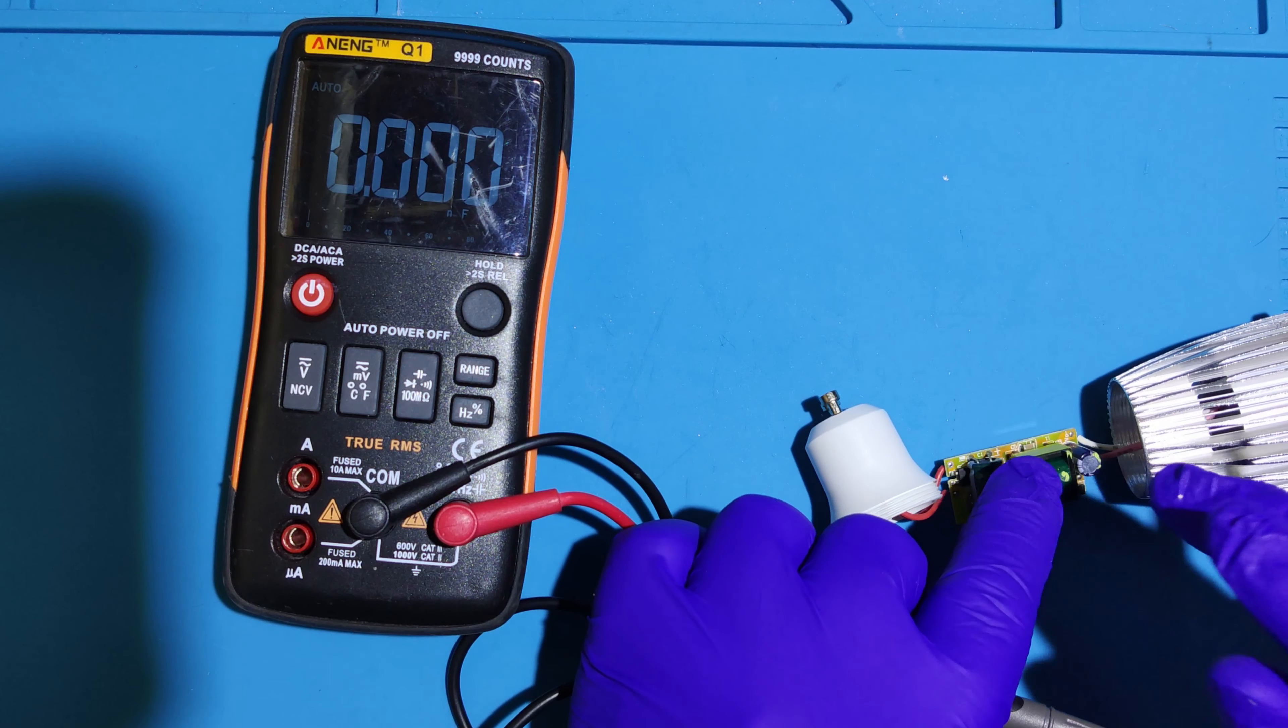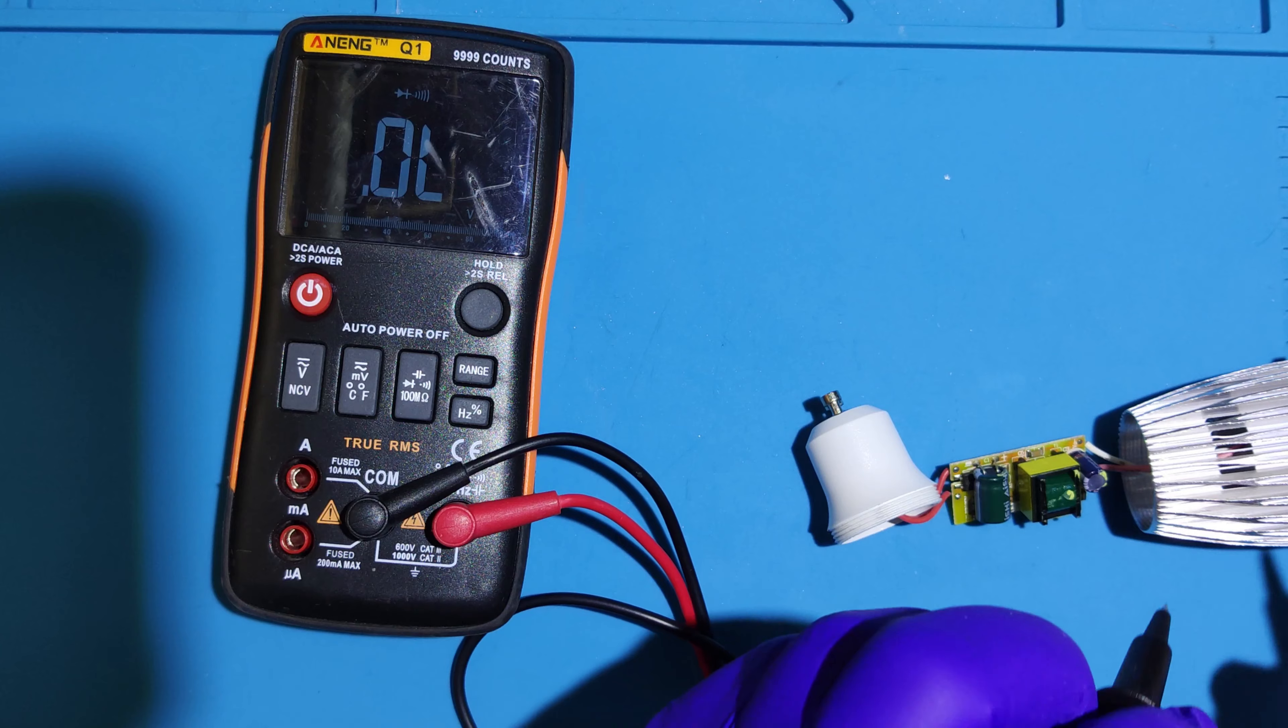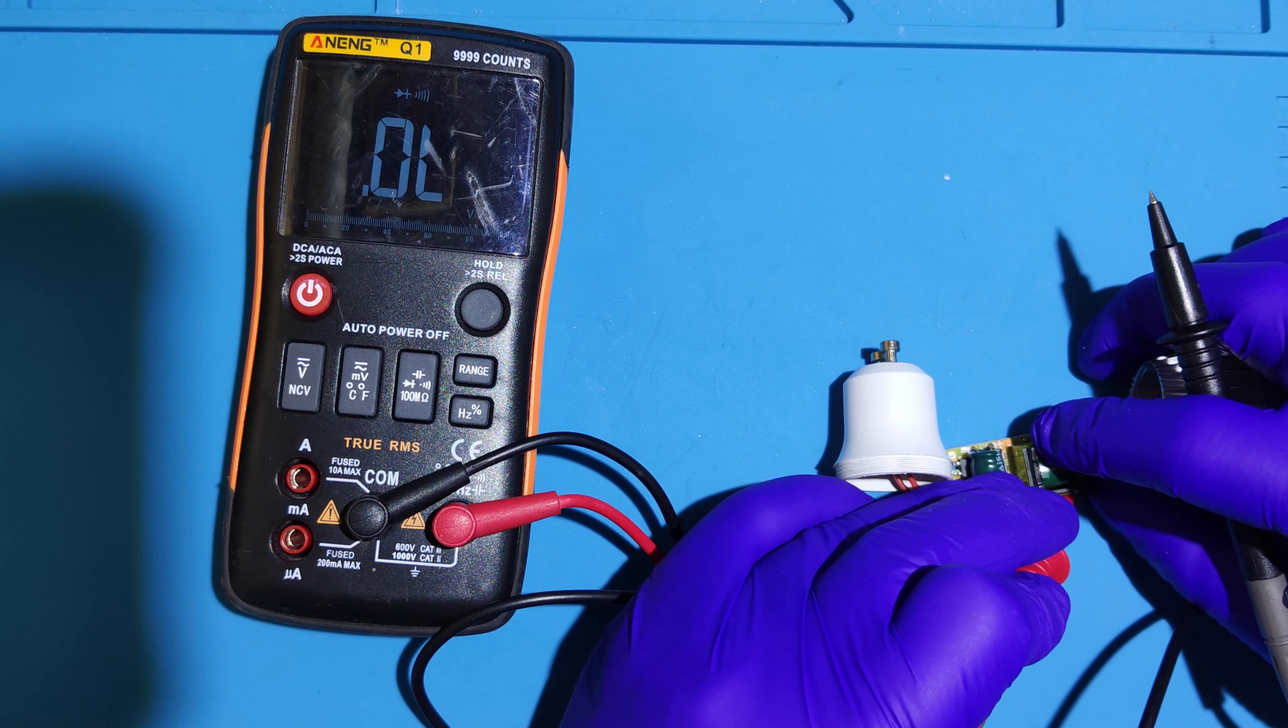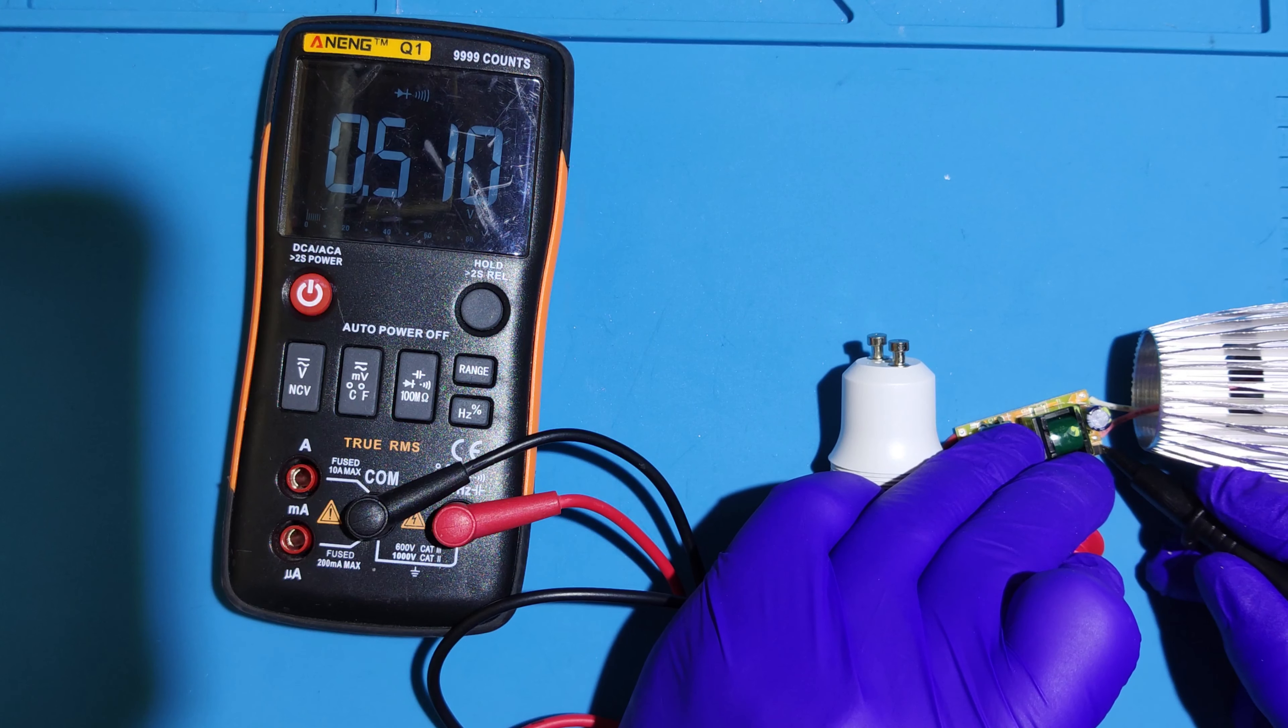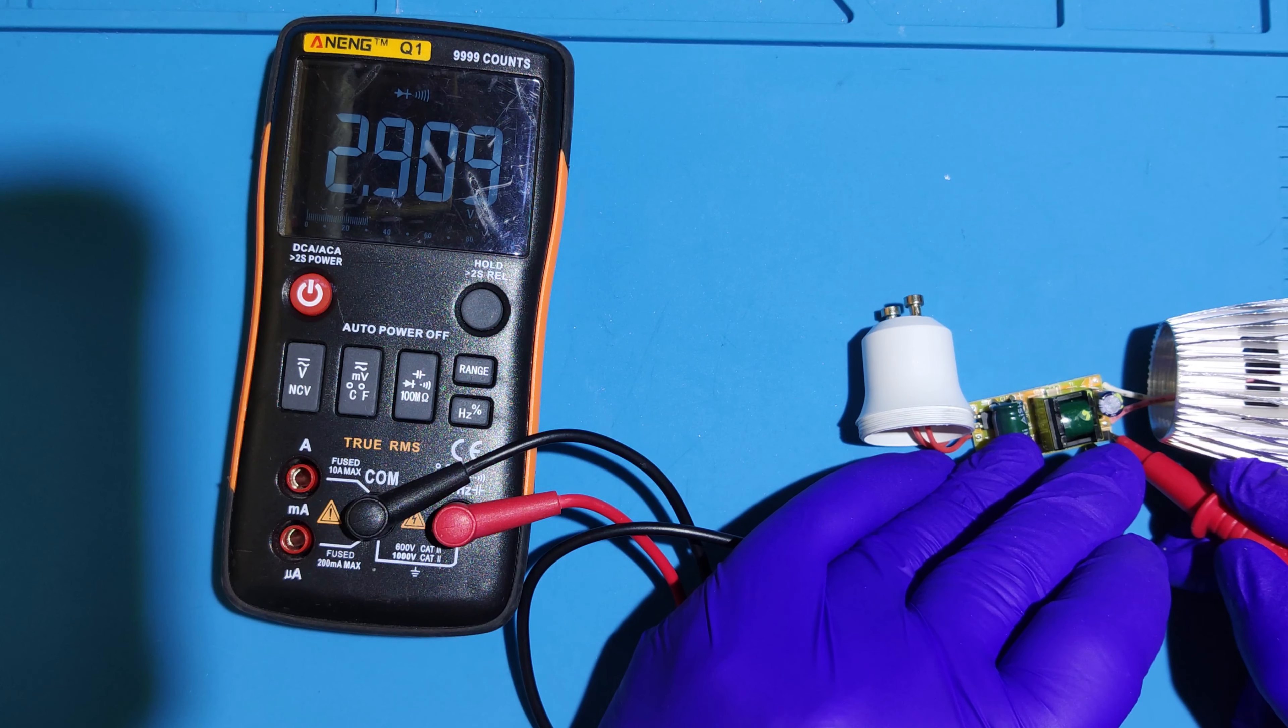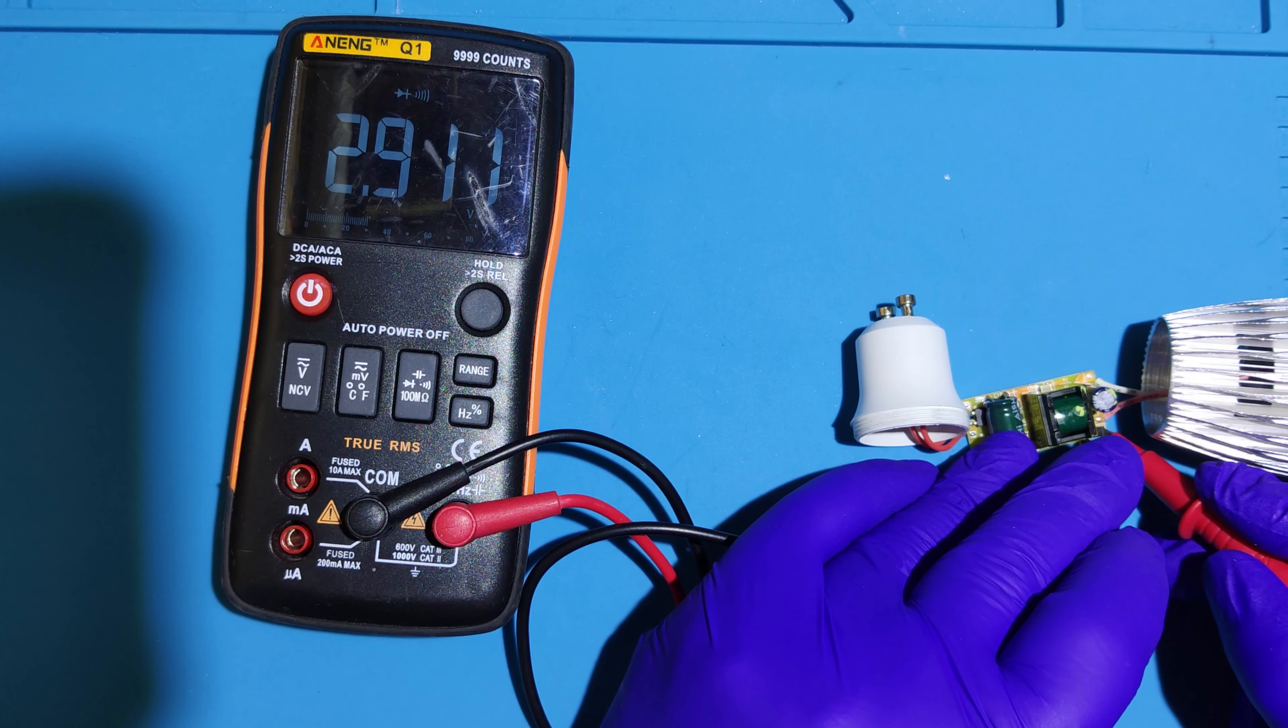Let's measure our diode as well while we're here. Stop. Diode mode. If our rectifier diode is working. 0.5. By the way it should be nothing. 2.9, that's weird. Hmm, that's odd.